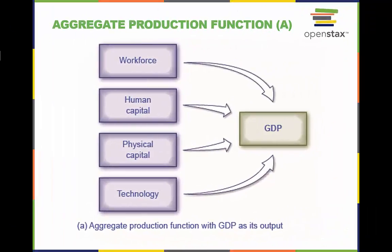A production function is the process of turning economic inputs like labor, machinery, and raw materials into outputs like goods and services used by consumers. An aggregate production function shows what goes into producing the output for an overall economy. This aggregate production function has GDP as its output.